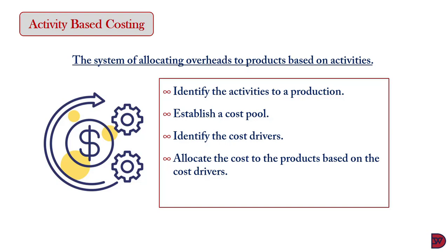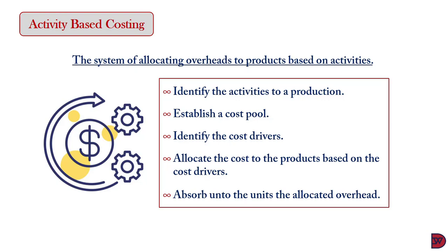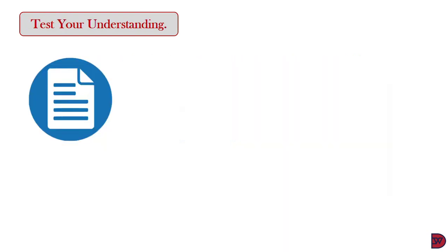The cost driver is used to allocate the overheads — the costs that are pooled — to the various products using those activities. For example, if a product stores its units in the warehouse, the space it occupies (the cost driver) allocates a portion of the rent (the cost pool) to it. The allocated cost is then absorbed onto the unit to arrive at the cost per unit. Secondary or indirect costs must first be absorbed onto the primary cost pool before apportioning a portion to the product.